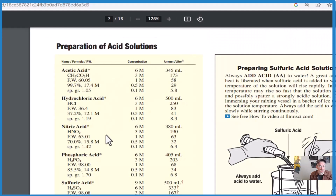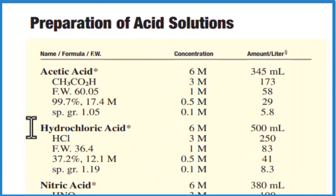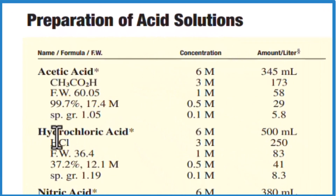The first way is just to use a recipe. Often when you buy hydrochloric acid, you get concentrated hydrochloric acid and it comes with a recipe. I'm looking here at Flynn Scientific — this I actually got online — hydrochloric acid.